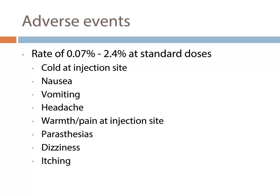Adverse events as well as allergic reactions have been associated with gadolinium-based contrast agents. When compared with iodinated contrast agents used for CT examinations, gadolinium-based contrast agents are generally associated with a lower rate of adverse events and allergic reactions. For adverse events, that rate is somewhere on the order of 0.07 to 2.4 percent at standard doses. These events can include cold at the injection site, nausea, vomiting, headache, warmth or pain at the injection site, paresthesias, dizziness, and itching.